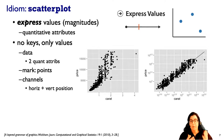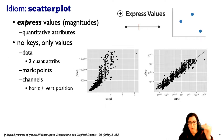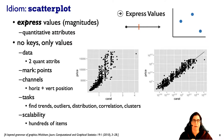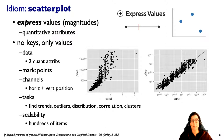For scatter plots: we have two quantitative attributes; the mark type is points; the visual channels are horizontal and vertical position. Tasks include finding trends, spotting outliers — like a clear outlier in the upper right corner — understanding distributions, and finding correlations.